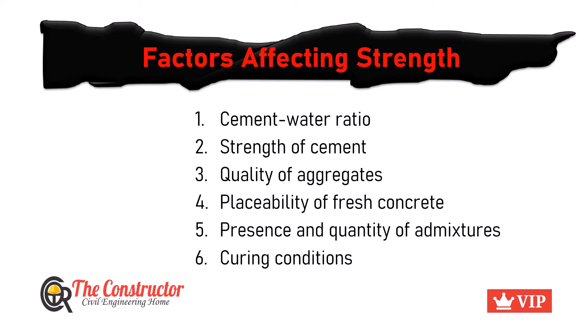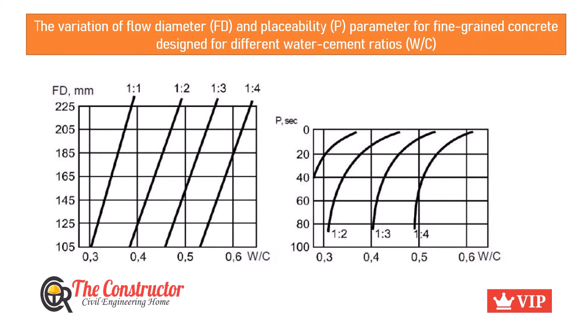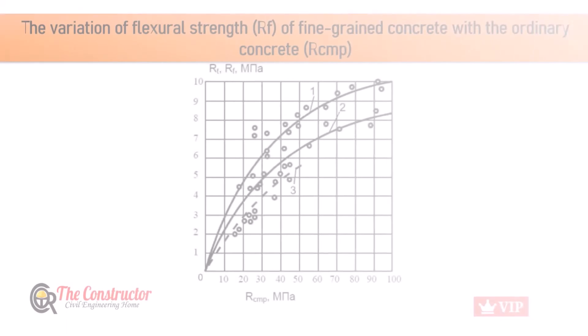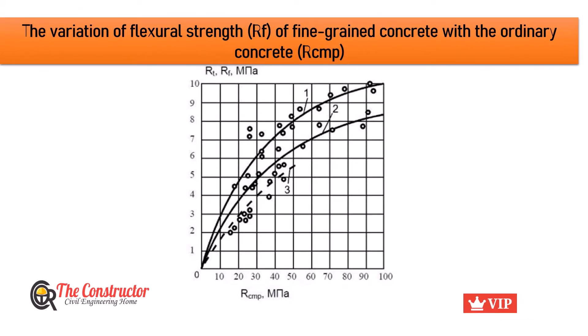Let's discuss a figure showing a graph between the flow diameter FD and the placeability parameter P for fine grain concrete derived for different water-cement ratios. Another graph shows the variation of flexural strength RF of fine grain concrete compared to ordinary concrete with flexural strength RCMP. Curves 1 and 2 represent the flexural strength of sand and ordinary concrete respectively, while curve 3 represents the tensile strength of sand concrete.